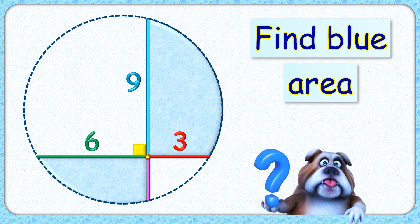Welcome everyone to this interesting question. We have a circle with two chords intersecting each other at an angle of 90 degrees. They are cutting each other at lengths of 6, 3, 9, and x centimeters. The exciting part is with this limited data we have to find the area of this blue shaded region.